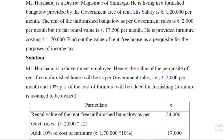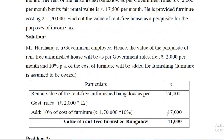As far as furniture is concerned, it is assumed to be owned by the employer because nowhere is it mentioned that rent is paid for the furniture. If furniture is owned, 10% of original cost is taken as the perquisite value, excluding laptops and computers. If the furniture is hired, then actual hire charges are to be taken.